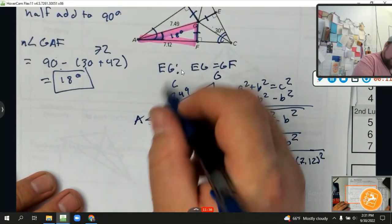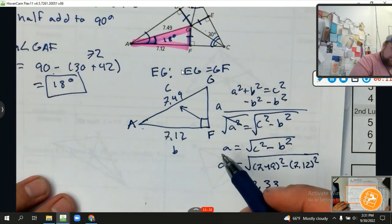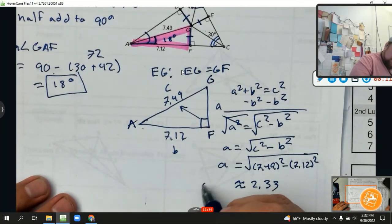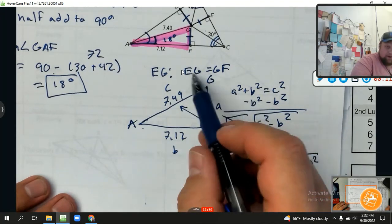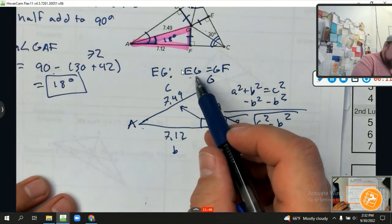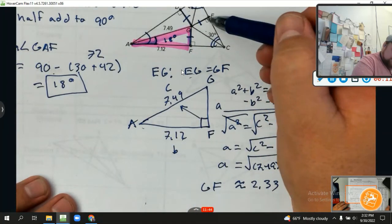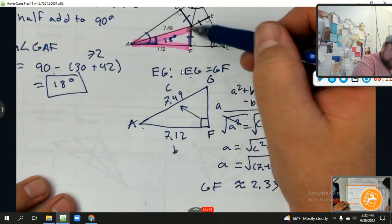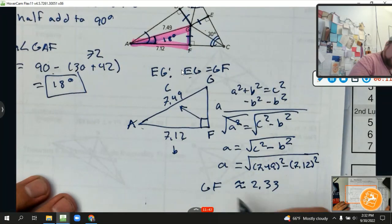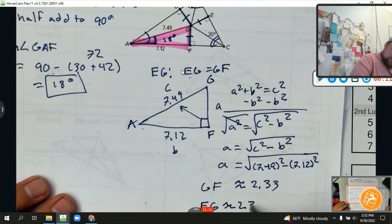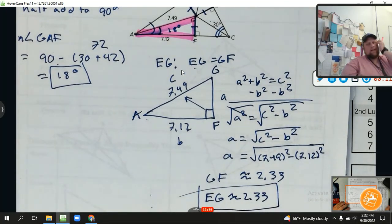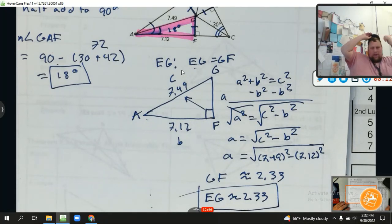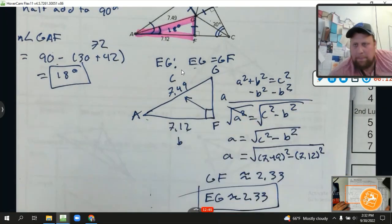So I know that this a side, which if we label it GF, is approximately 2.33. And what did we say up here? EG equals GF, right? So my EG is equal to my GF, so my EG is approximately 2.33. Boom, that's a good problem. I like it. With that said, you ready? Go get on your homework. Get her done. Peace out.